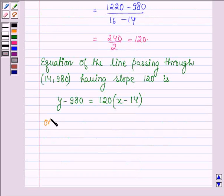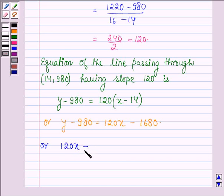or this is further equal to Y minus 980 equals 120X minus 1680 or 120X minus Y is equal to 1680 minus 980 or 120X minus Y is equal to 700.